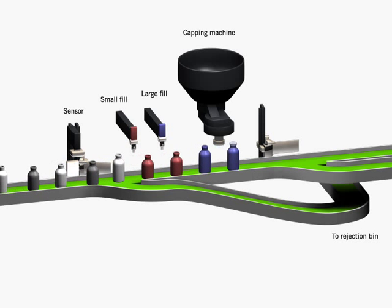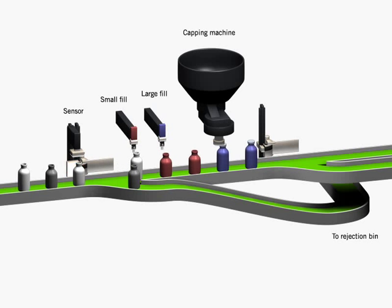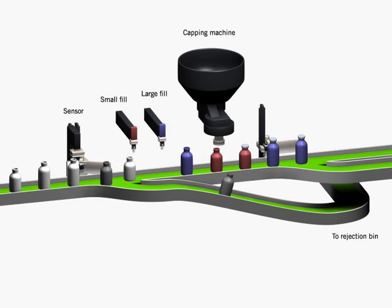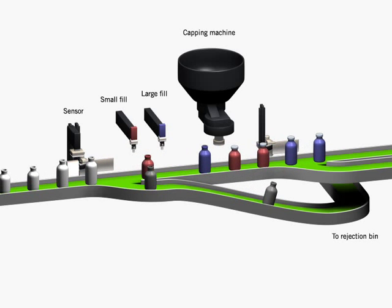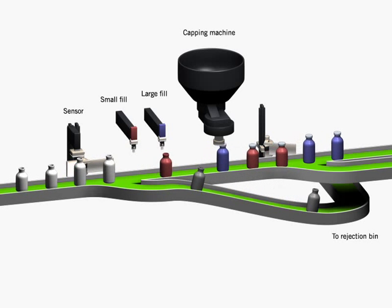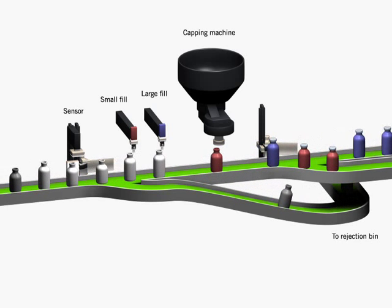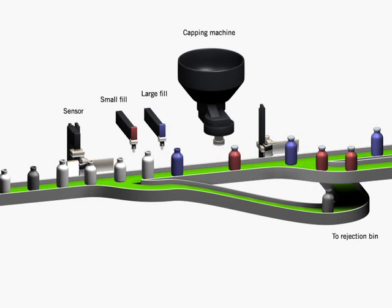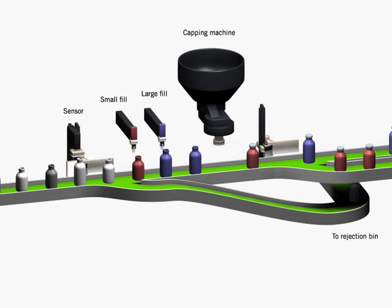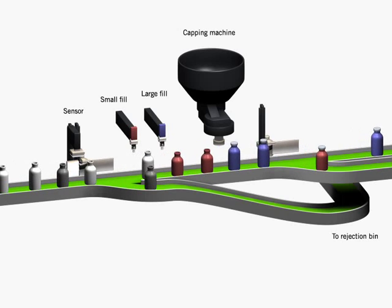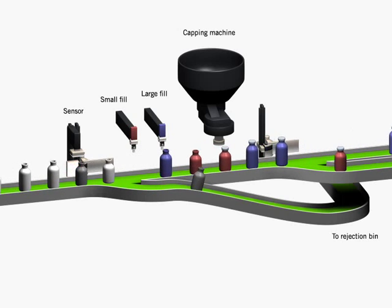Some of these parts are large bottles, others are small bottles, and others are parts which are deemed to be defective. The shift register allows the machine to keep track of the parts at various stages in the manufacturing process.